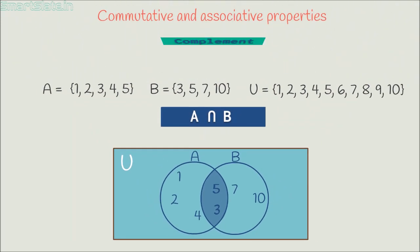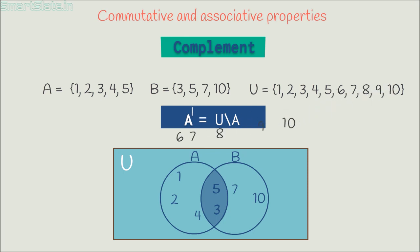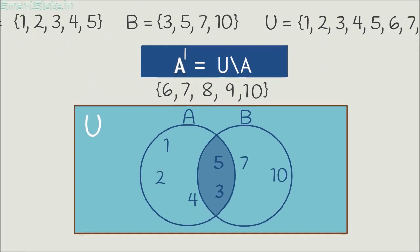Let's check what the complement of a set is. The complement of A is the elements from the universal set which are not part of A, and it is denoted as shown. This is the complement of A with respect to universal set U. In this example, elements 6, 7, 8, 9 and 10 are not in set A but are present in the universal set. Hence, the complement of A with respect to U is the set with elements 6, 7, 8, 9 and 10. In the diagram, the first circle represents set A and the elements outside this circle make the complement of set A.